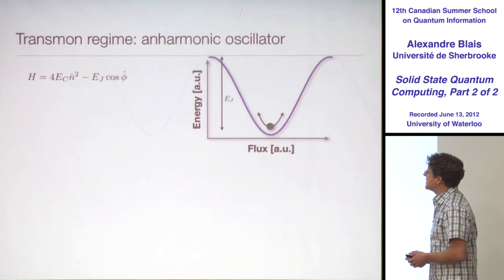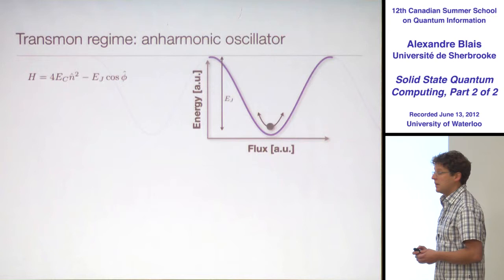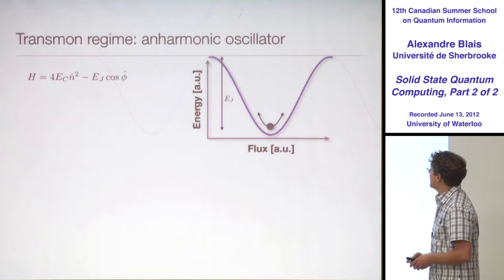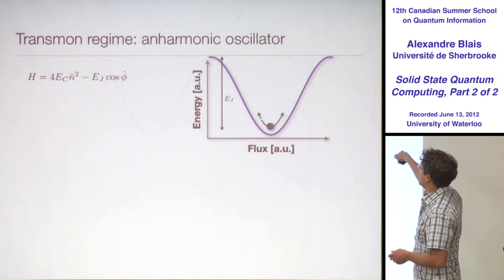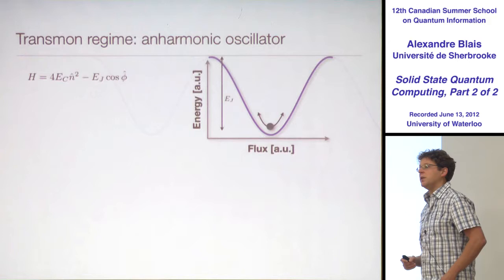The way to think about this is: it's a particle of coordinate phi and of mass C in a cosine potential. Coming back to the question asked earlier — you have this particle of mass M which is oscillating. And if these oscillations are large, it will eventually occupy other levels and the wave function will spread.